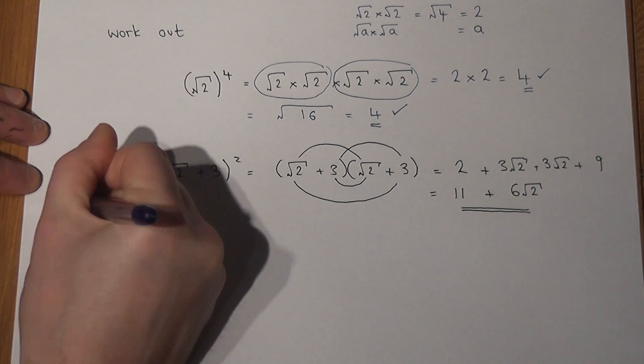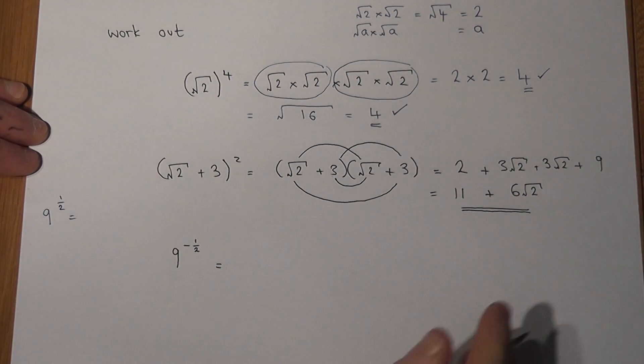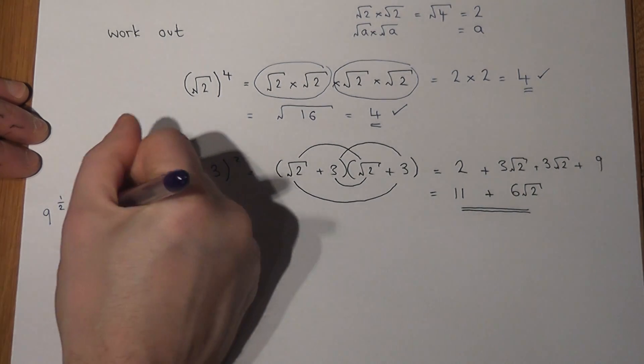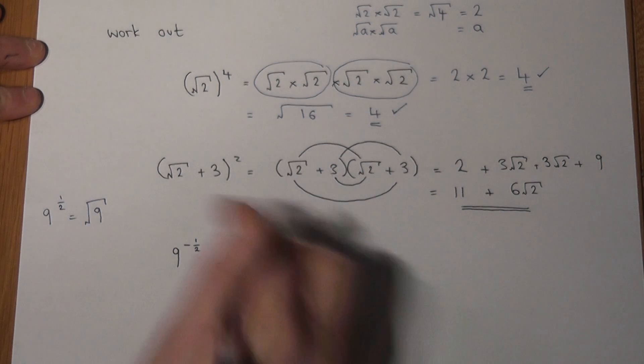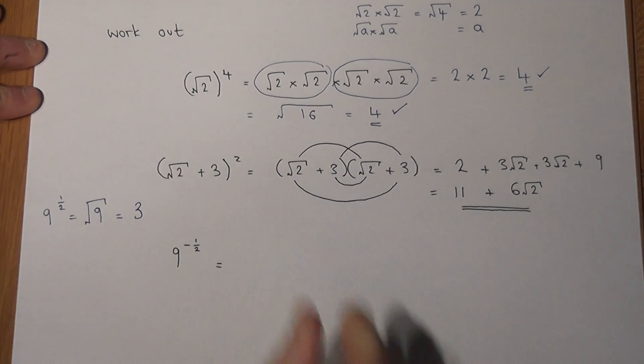Now the power of a half just means the square root. It's the opposite of squaring. So a half means the square root of 9, which we know just equals 3.